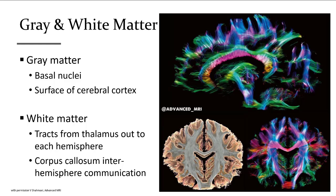The white matter is like the wiring of the brain, as indicated by the tracks visible in MRI images. The primary regions containing white matter are the tracks extending out to each hemisphere from the thalamus, as well as the corpus callosum that runs side to side from one hemisphere to the other.